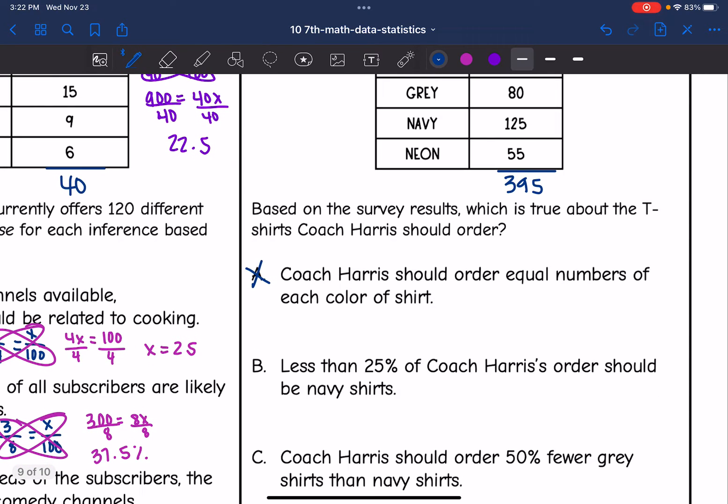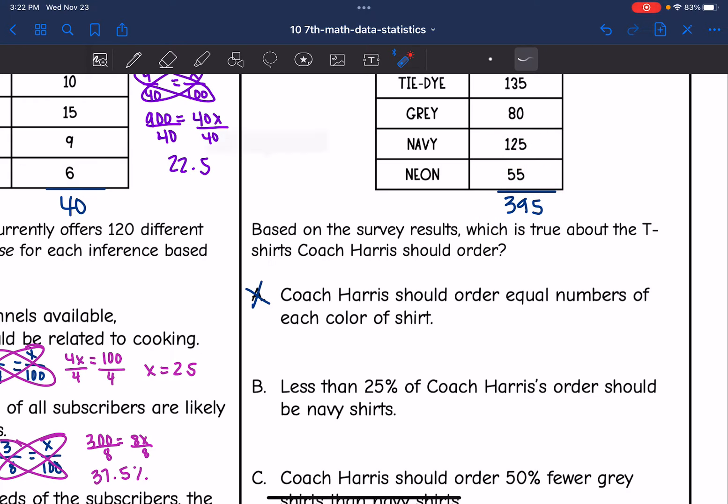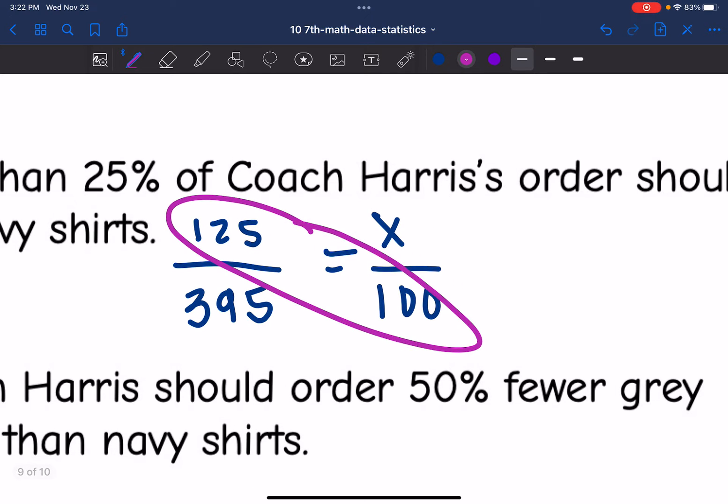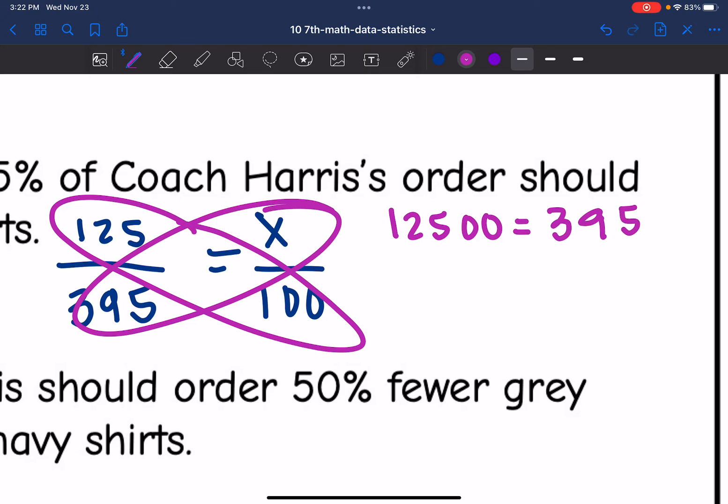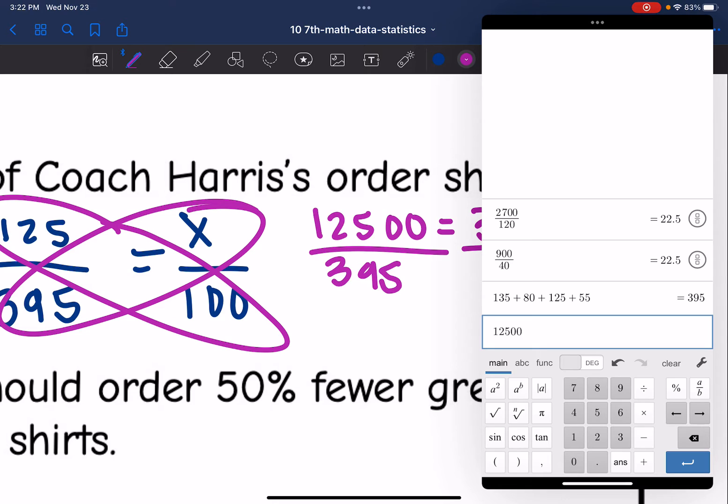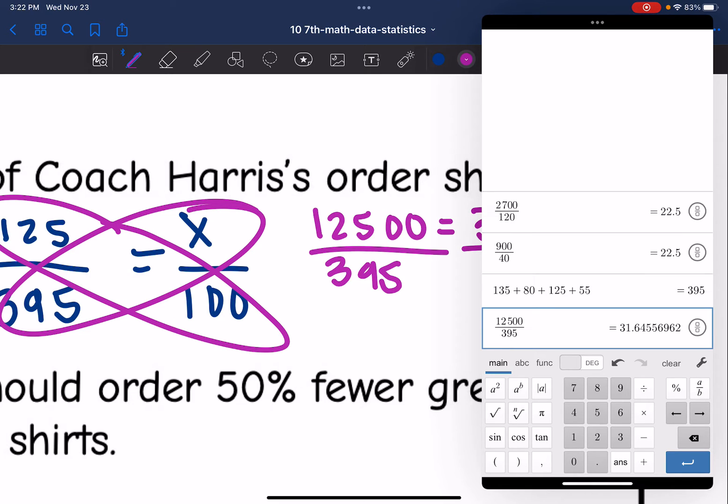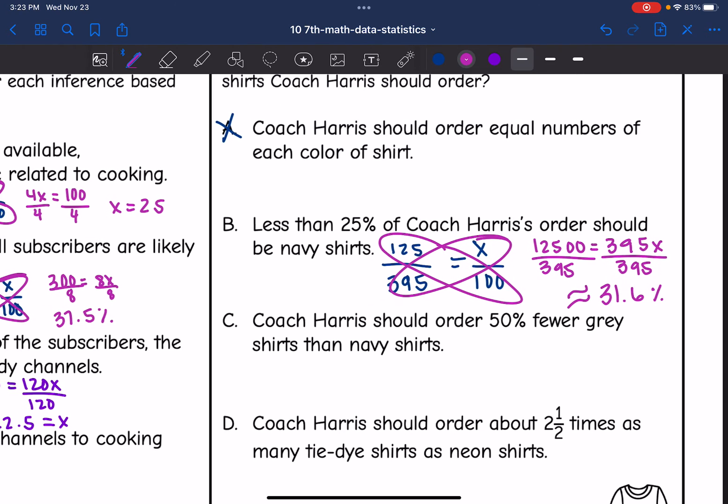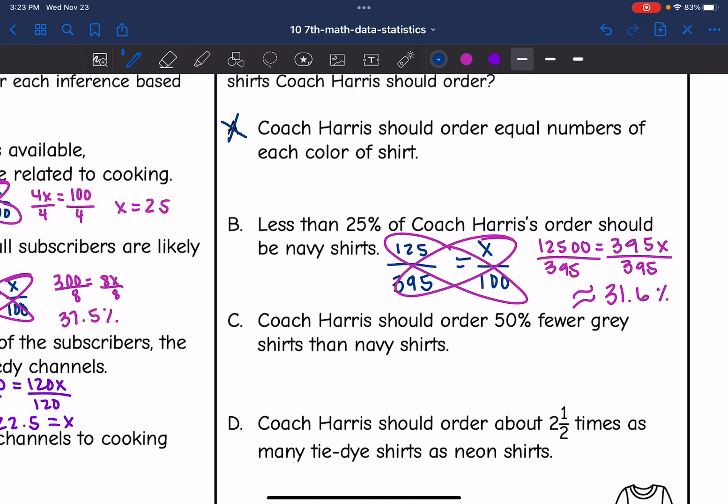Then B says less than 25% of Coach Harris's order should be navy shirts. So 125 out of the 395 people wanted navy shirts. So let's figure out what percentage that would be. So I'm going to cross-multiply. 125 times 100 would be 12,500. And then 395 times X would be 395X. And then I'm going to divide by 395 to figure out this percentage. So 12,500 divided by 395 is about 31.6%. And the statement said less than 25% of Coach Harris's order should be navy shirts. That is false. More than 25% should be navy based on the percentage we got.